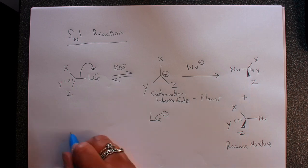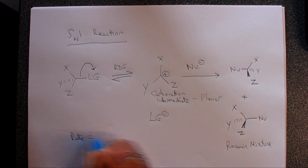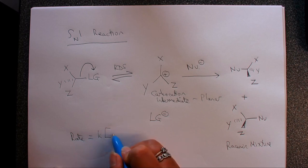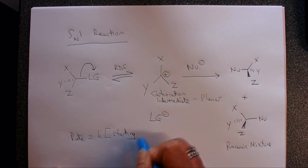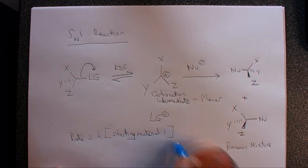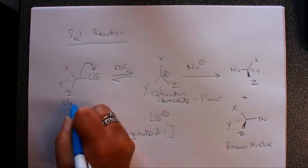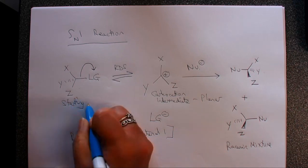Also just to note, the rate is only dependent on this one species, so rate equals a constant times the concentration of the starting material. We just call it starting material one, and we call this here starting material one, just so you're clear which we're talking about.